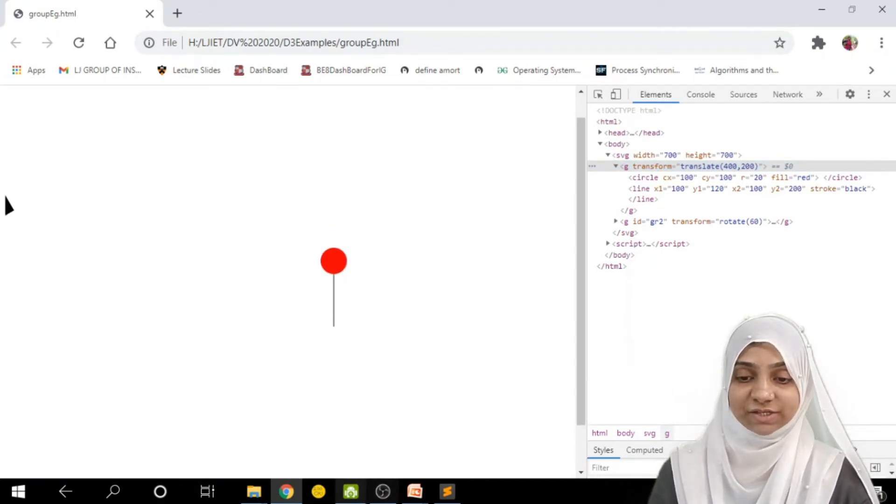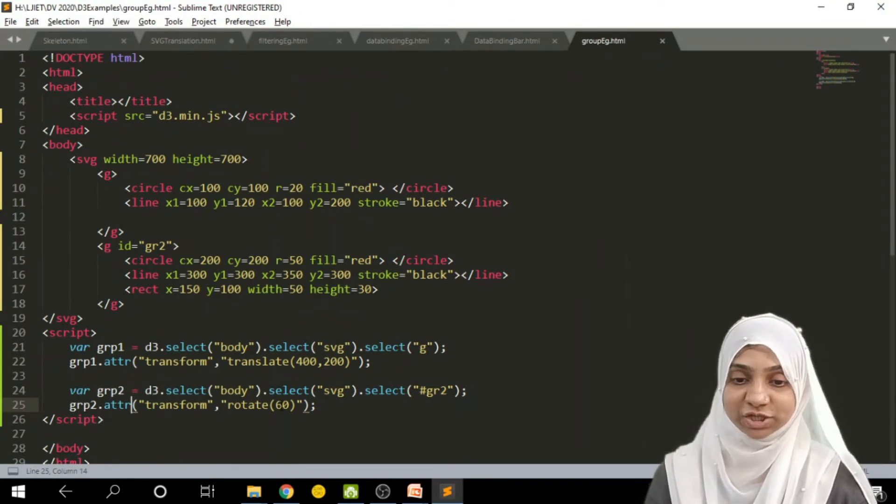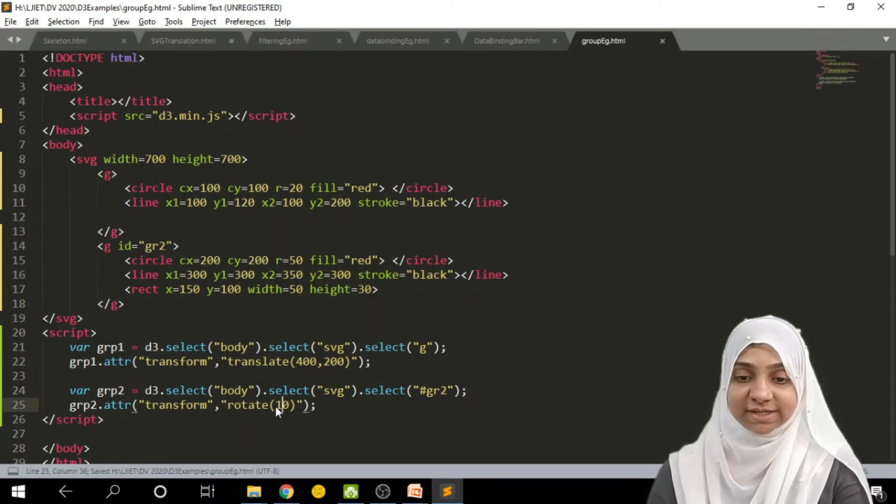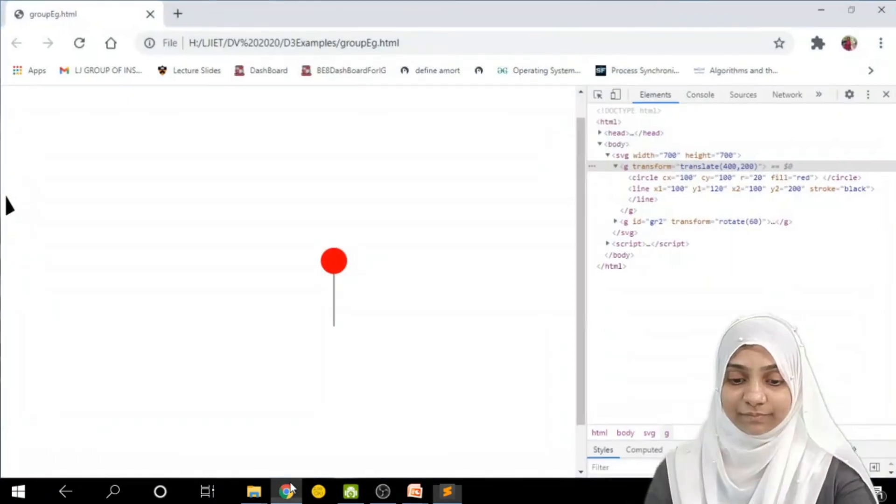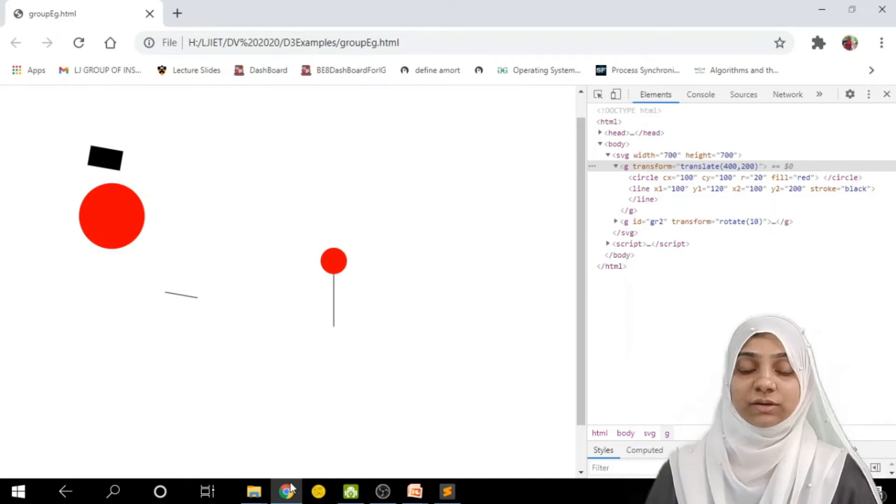As you can see, margins are going outside. Let me reduce my rotation angle. I would like to rotate it in only 10 degrees. As you can see, complete group is rotated in a clockwise direction, 10 degrees.